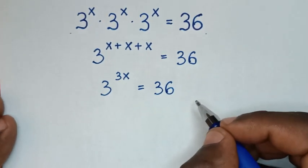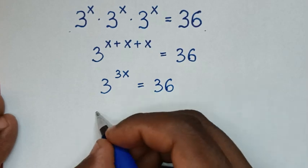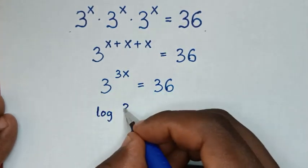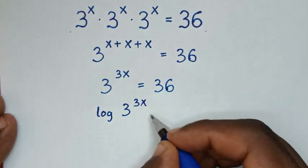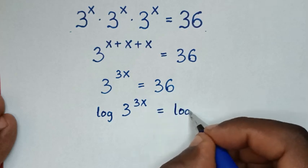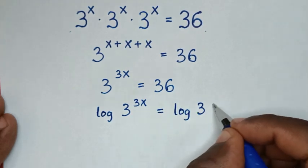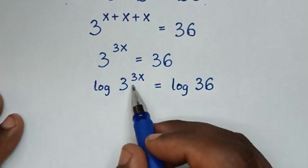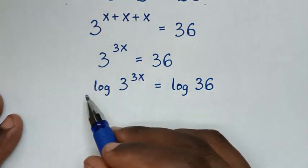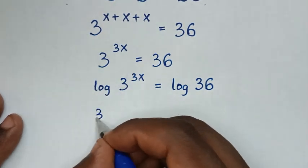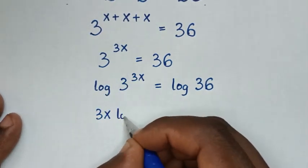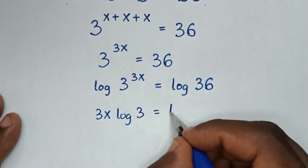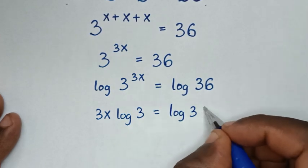In the next step we will apply log to both sides, so it will be log of 3 power of 3x is equal to log of 36. Then this power of 3x moves to the front: 3x times log of 3 is equal to log of 36.